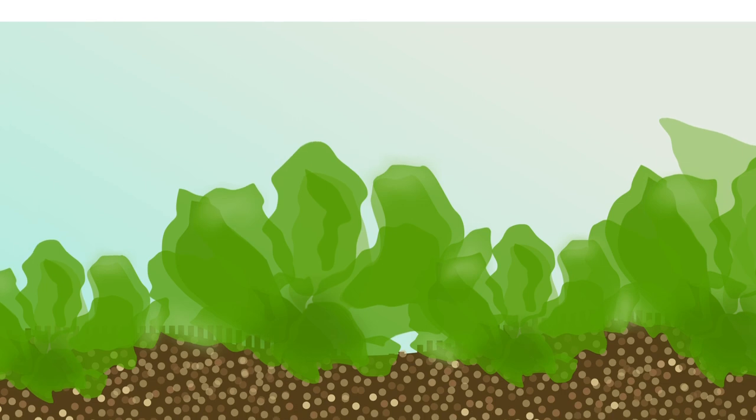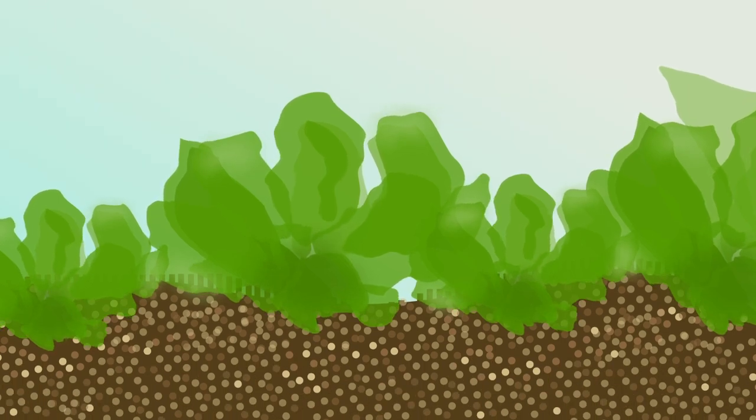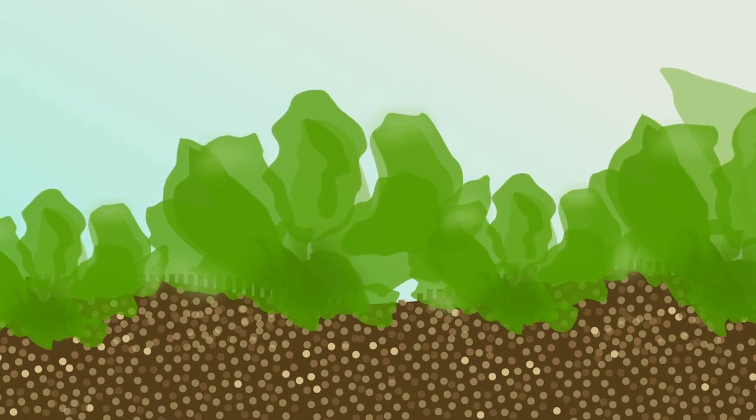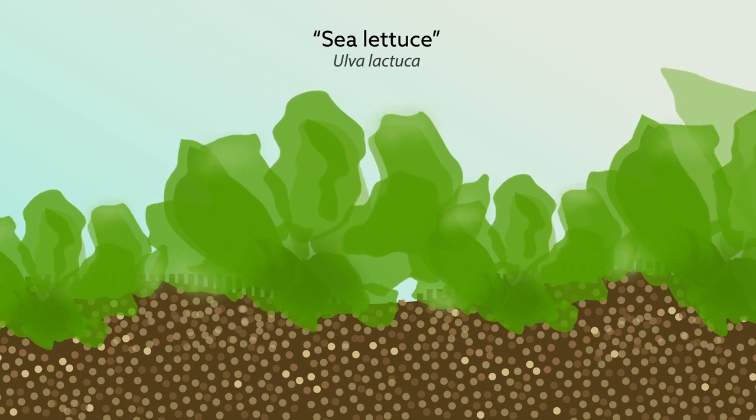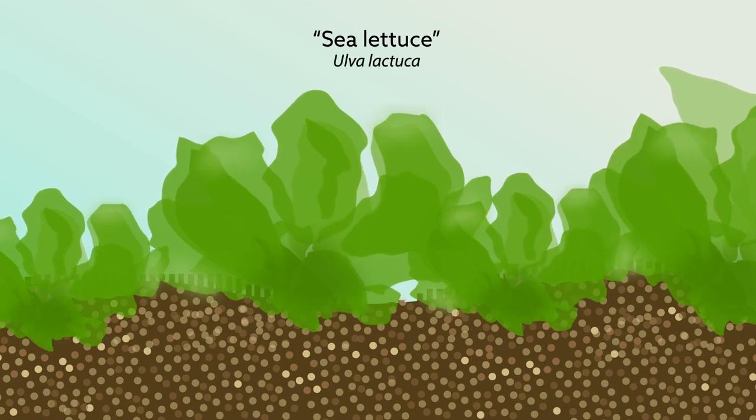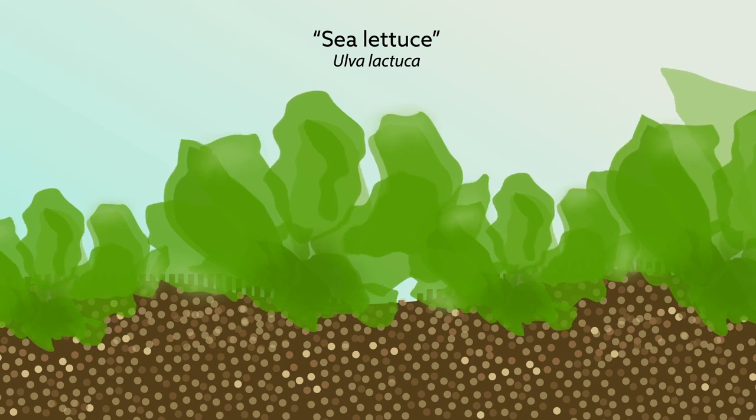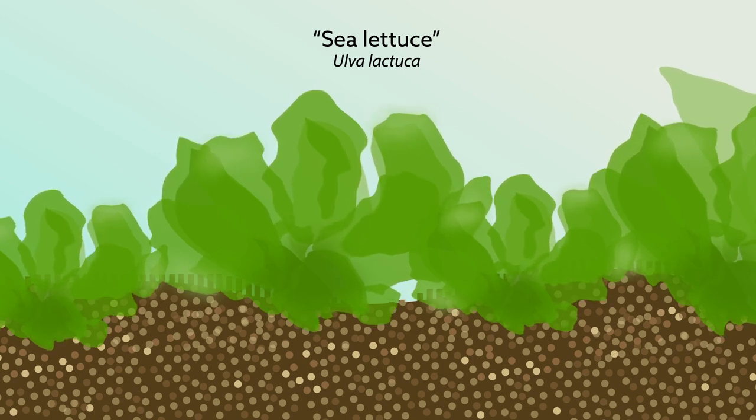Fortunately, that could soon change, all thanks to an edible green algae commonly referred to as sea lettuce. Its scientific name is Ulva lactuca, and it's actually a macroalgae found sprouting along coastlines all over the world.